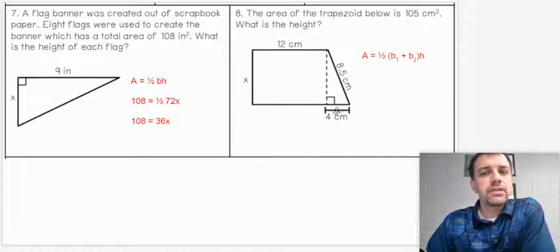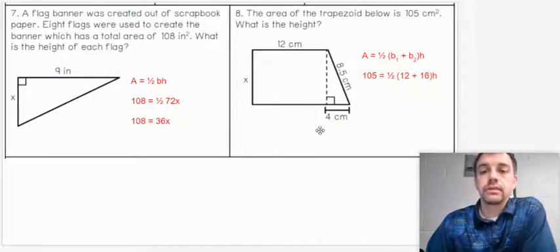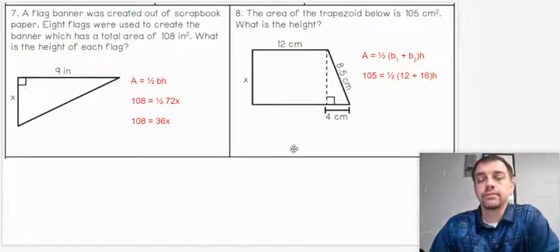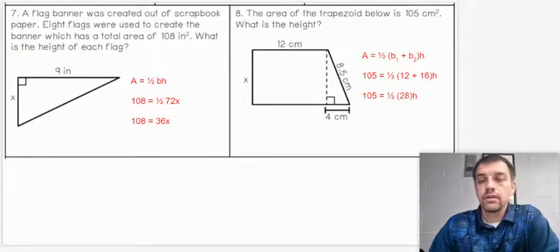So another thing to be aware of is they give us base sub 1. They don't give us base sub 2, but they do tell us this triangular shape here has a 4 centimeter width. So we're going to add that to 12. So our formula is going to look like this. We're told 105 centimeters is the area. We're going to set that equal to one-half times 12 plus 16. So notice I added the 4 to the 12 to get 16. And we're looking for the height. So we're going to go ahead and solve everything we can on the right-hand side before we divide it by 105.